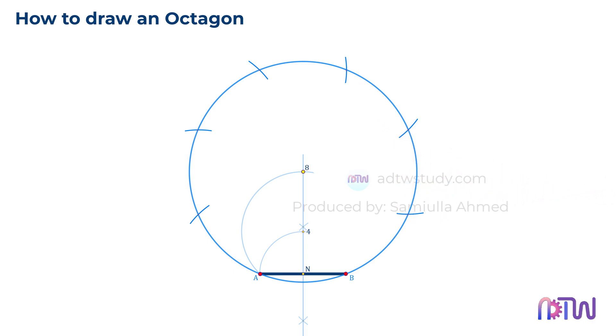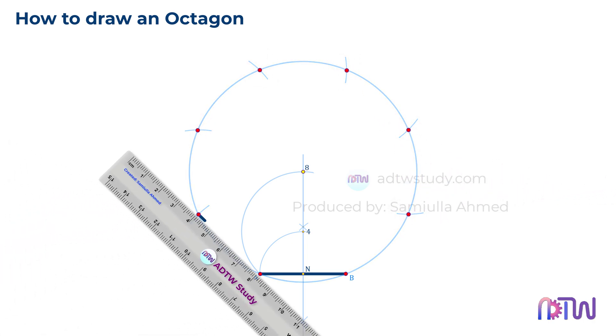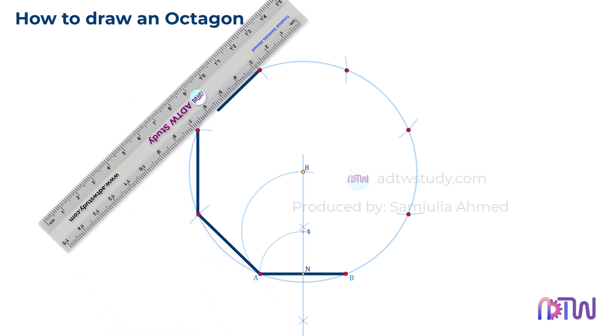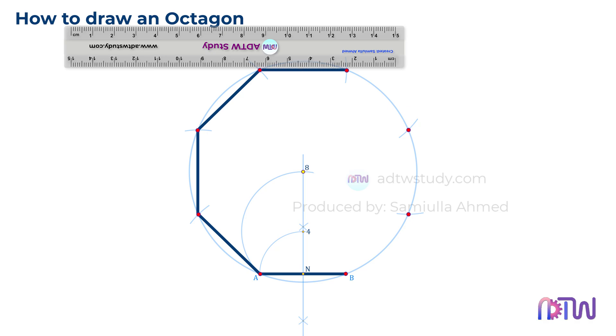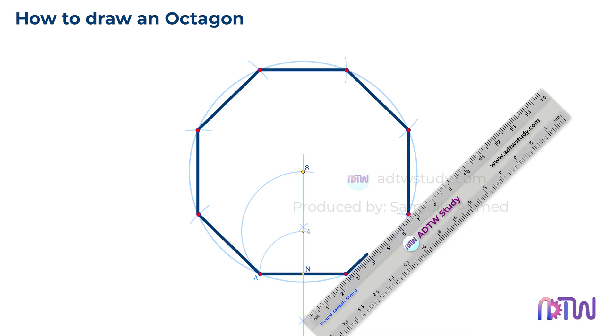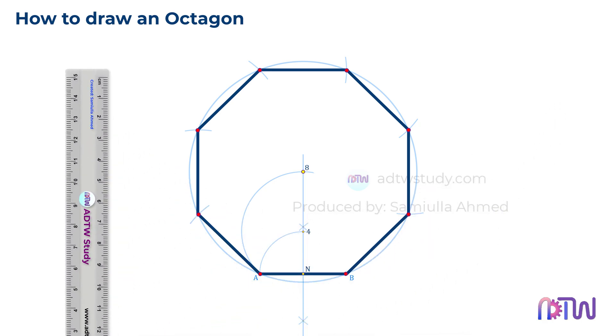Finally, join all the marked points to form the octagon. This completes our construction of the octagon using a compass.